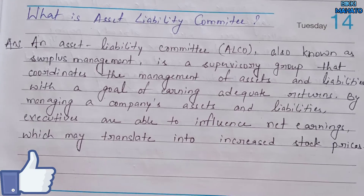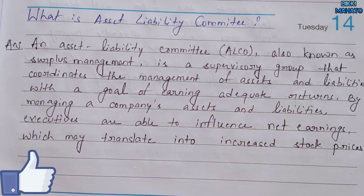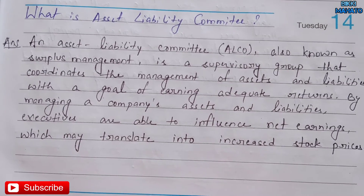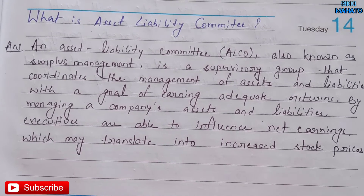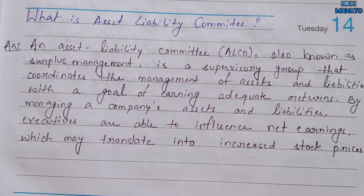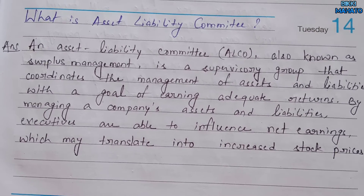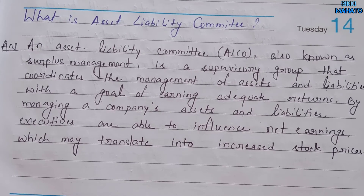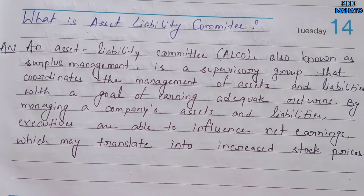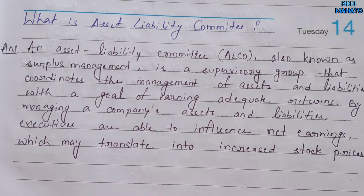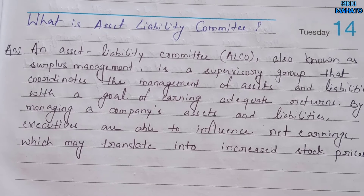Today's topic is the Asset Liability Committee. An Asset Liability Committee, or ALCO, also known as surplus management, is a supervisory group that coordinates the management of assets and liabilities with a goal of earning adequate returns.